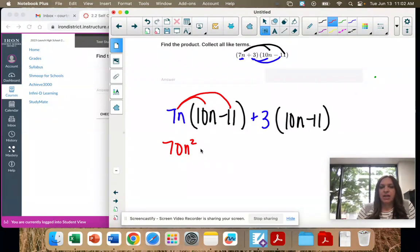7 times negative 11 is negative 77n. 3 times 10 is 30n. 3 times negative 11 is negative 33.